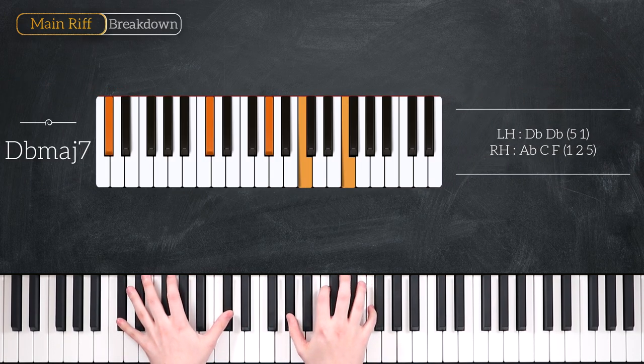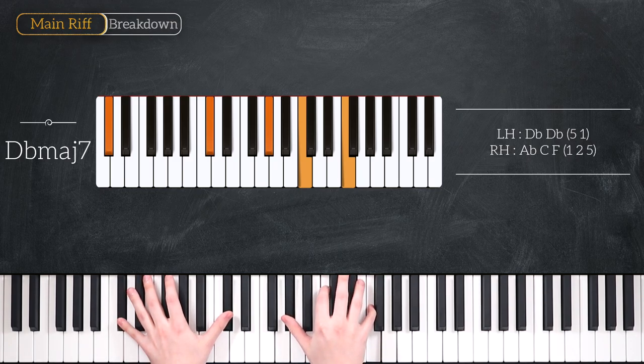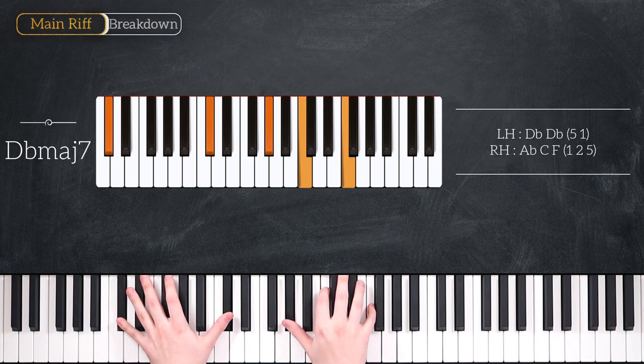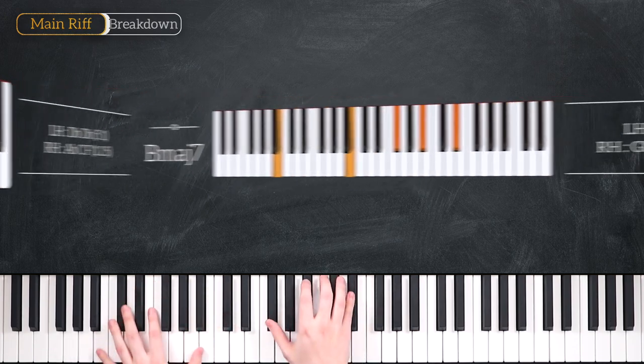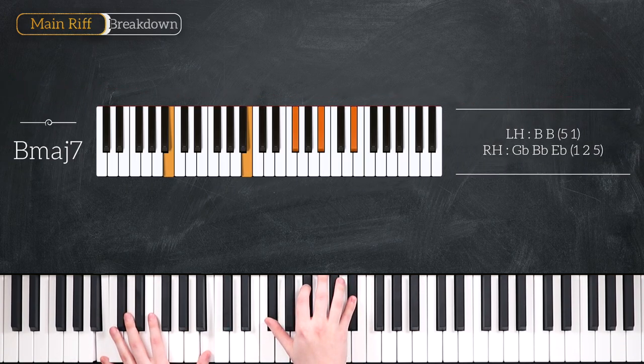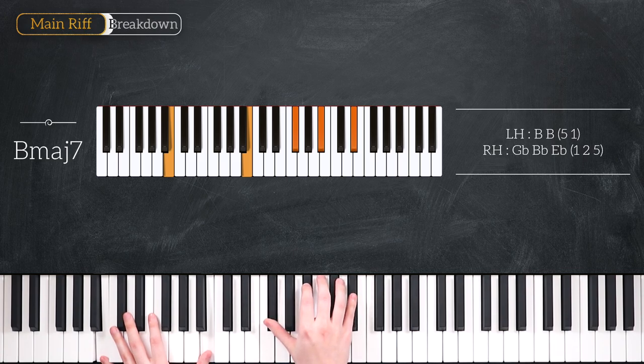Our second chord is a Db major 7 chord with octave Db in the left hand, Ab, C natural and F natural in the right hand. And our last chord is a B major 7 chord, that's B naturals in the left hand, Gb, a Bb and an Eb in the right hand.